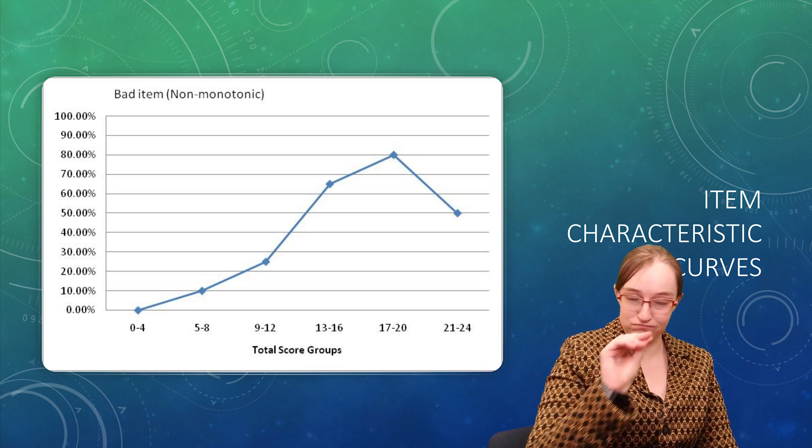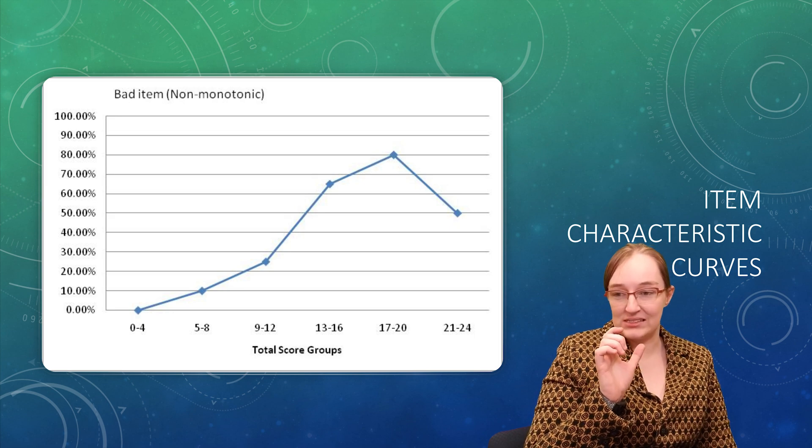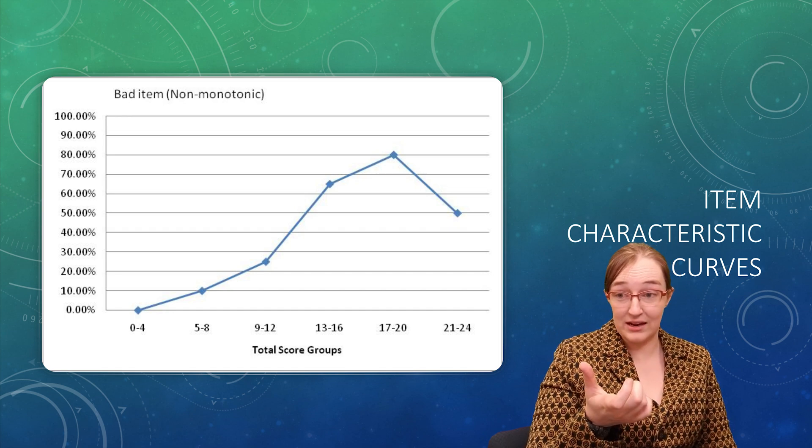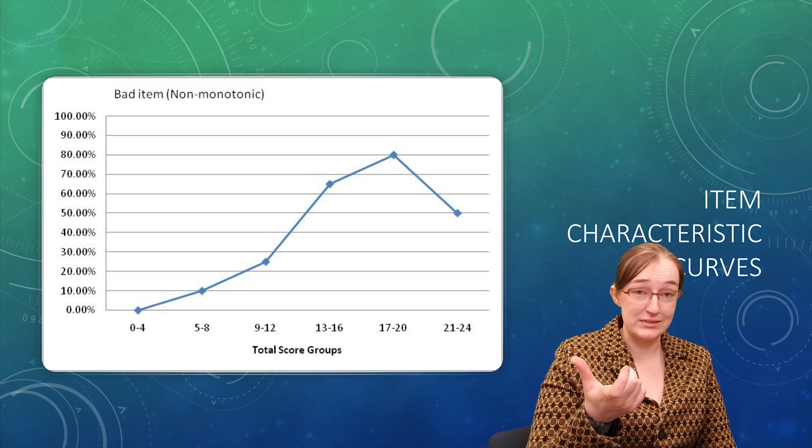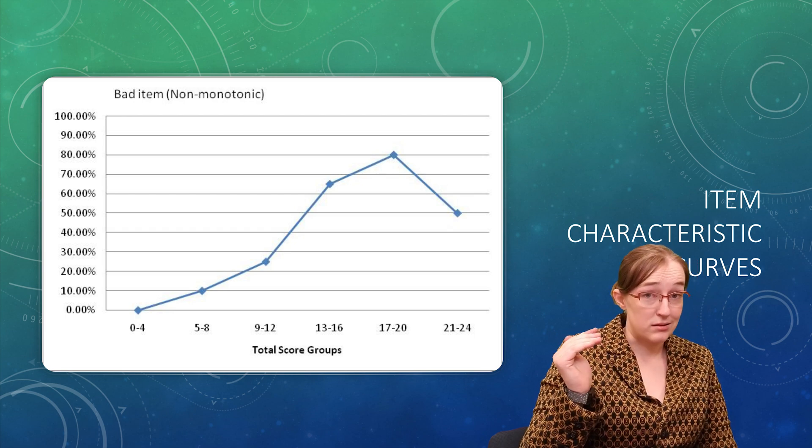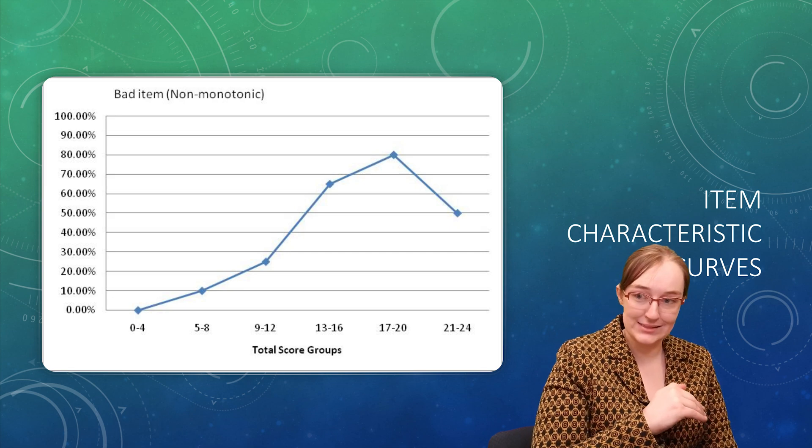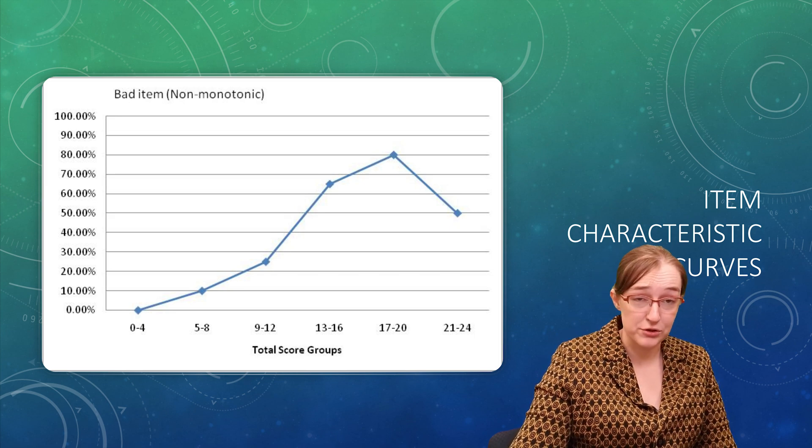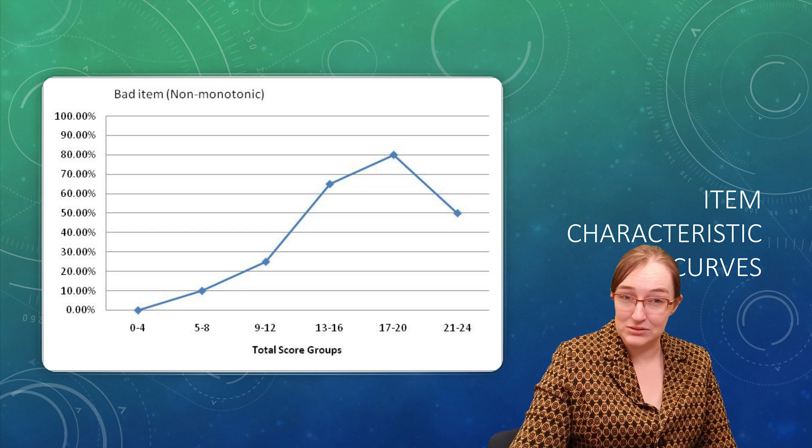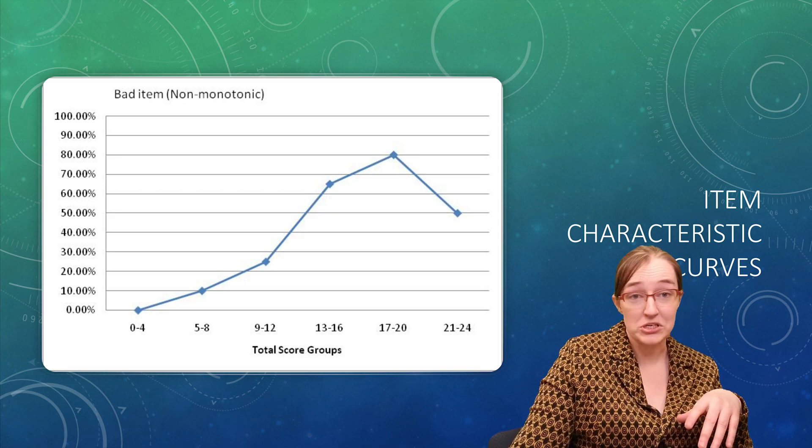This is not a linear relationship. We've got a curve where the group most likely to get this question correct is the group where their total scores were between 17 and 20, as opposed to the group where only about 50% of them got this correct, the highest group. If this was a good item, we would expect this curve to be smooth. Here it indicates that knowing less is beneficial. So having a worse score in the range of 13 to 16, on average, these folks got this question right 65% of the time.